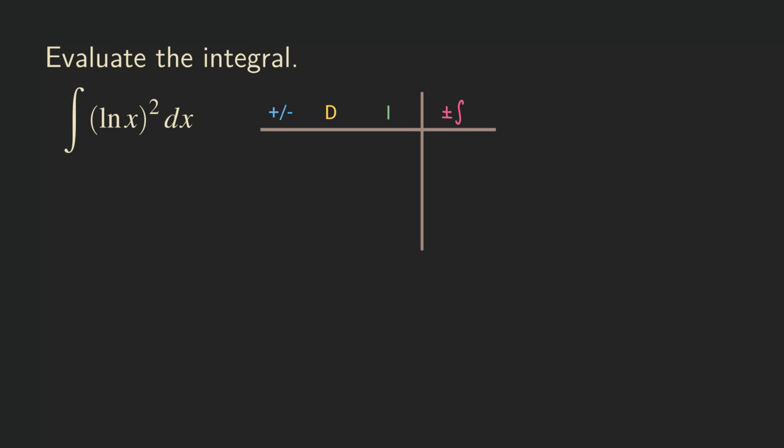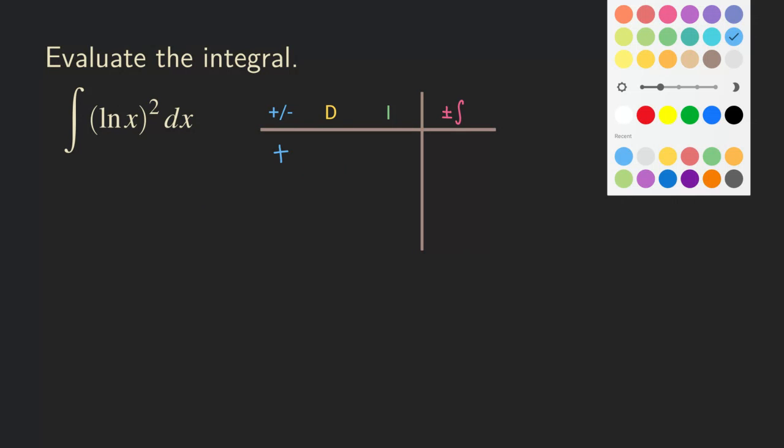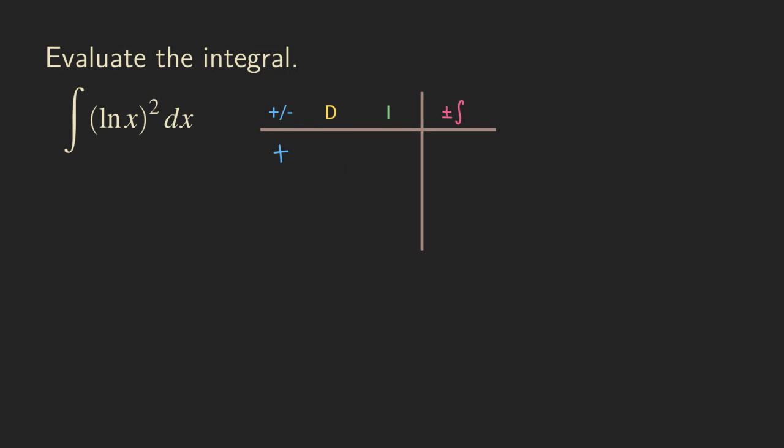So first, we are going to put the plus sign right here. That's our first row here. And then now we got to choose our u because this is really just the u column and that's the dv column. And how do we choose this one?